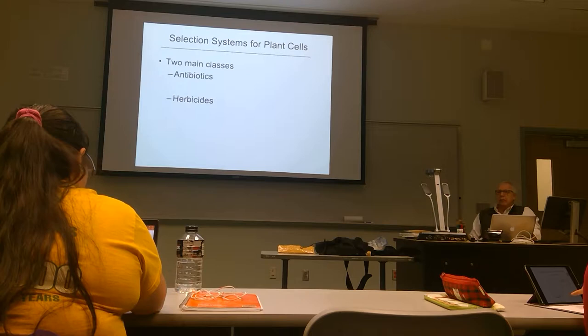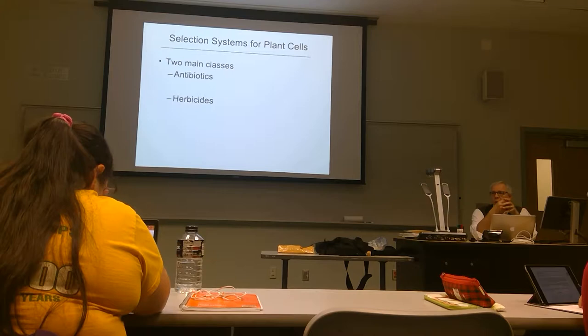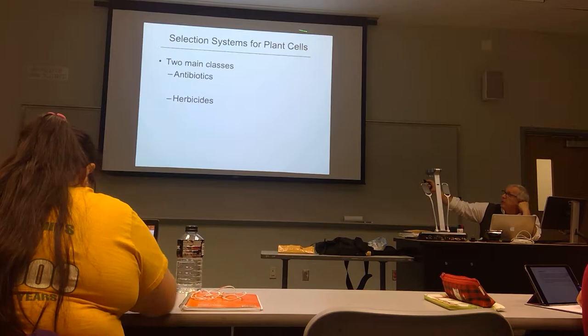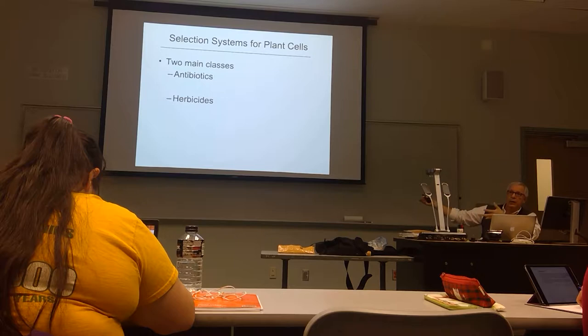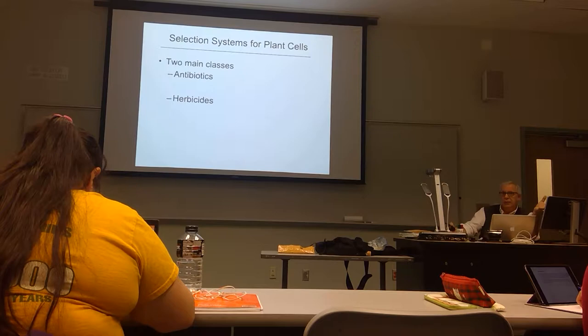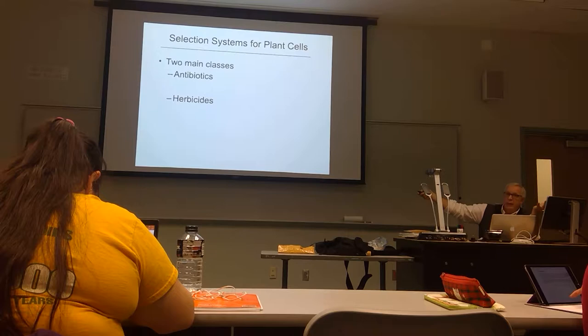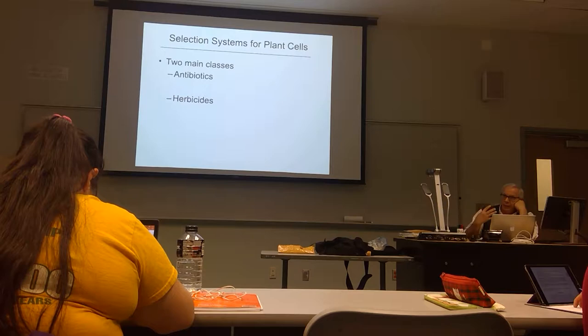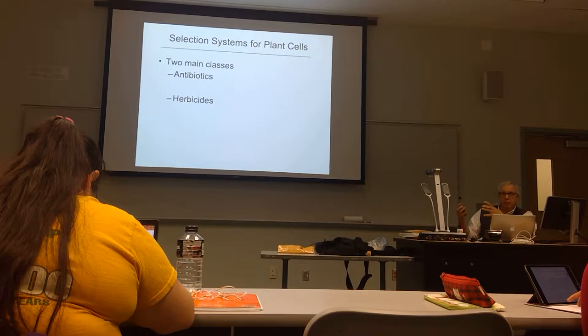For selectable markers in bacteria, we use antibiotics that kill the bacteria, and the selectable marker gene is an antibiotic resistance gene. We can use basically the same thing for plants — some antibiotics will kill plant cells. The other major type of selection agent for plants are herbicides: plant killers. If we have herbicide resistance genes, we can plate our bombarded cells on media containing the appropriate herbicide. The ones that pick up the herbicide resistance gene will grow; the ones that don't, won't.